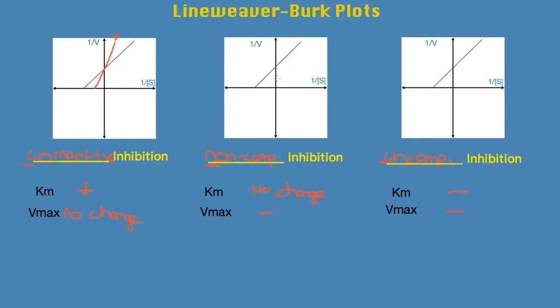Next up is the graph for the non-competitive inhibitor, and once the inhibitor is used, it's going to look something like this. Right, so Km is staying the same, whereas Vmax is decreasing.